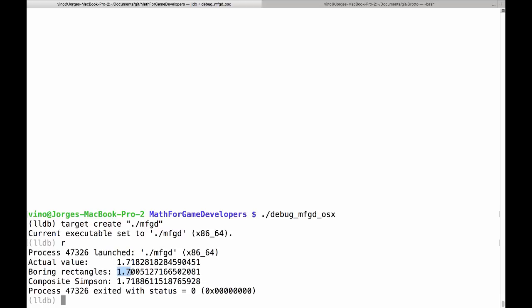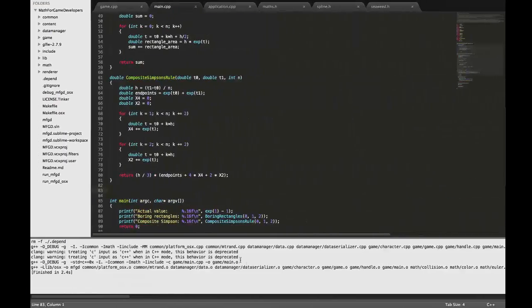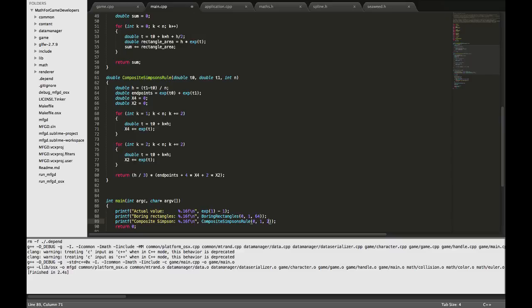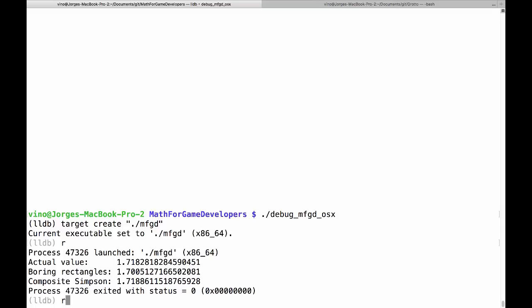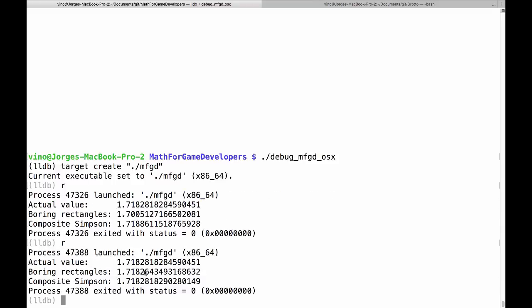And then here's the boring rectangles version with N equals two, by the way, we're only making two rectangles here. So you see, it's not very accurate. It's only accurate to two digits, but again, with two rectangles, composite Simpsons rule is accurate to four digits. So composite Simpsons rule is twice as accurate. You could say now let's kick the number of boxes up to 64. We're going to kick it up a lot and we're going to rebuild and we're going to go in here again and run it again.